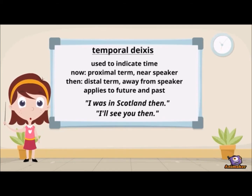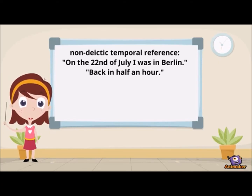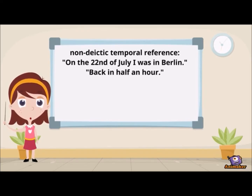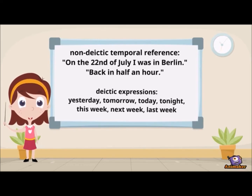We also use elaborate systems of non-deictic temporal reference, such as calendar time — for example, 'on the 22nd of July I was in Berlin' — and clock time — for example, 'back in half an hour.' These forms are learned much later than deictic expressions like yesterday, tomorrow, today, tonight, next week, this week, last week, just to name a few. All these expressions depend on knowing the relevant utterance time for their interpretation.